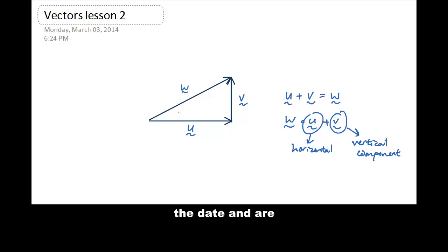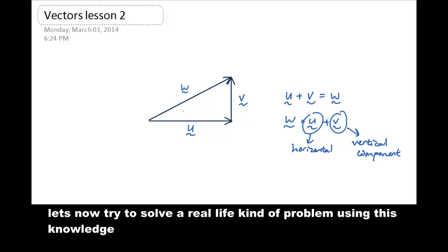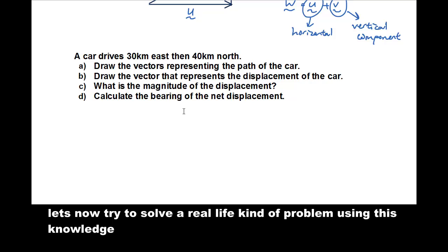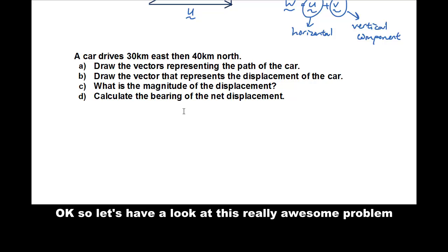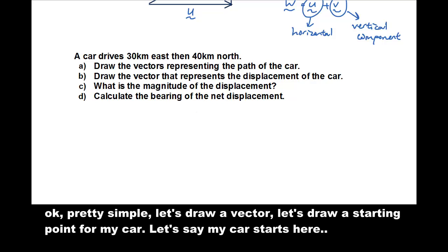Okay, and let's now try to solve a real-life kind of problem using this knowledge. Let's have a look at this really awesome problem. A car drives 30 kilometers east and then 40 kilometers north. Part a, draw the vectors representing the path of the car. Okay, so pretty simple.